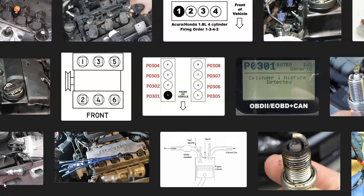That's basically it — a basic overview of how you go about fixing a Honda with the P0301 code. If you have anything to add, please comment below. If you have any questions, ask and I'll try to answer them. If this video helped you, please click like, click subscribe, and have a good day.